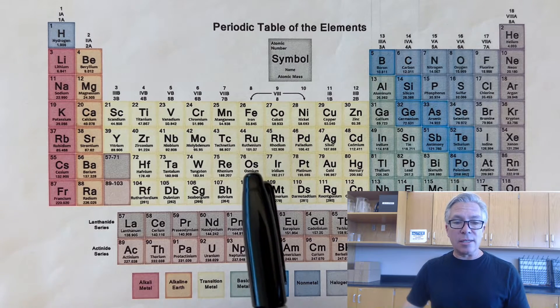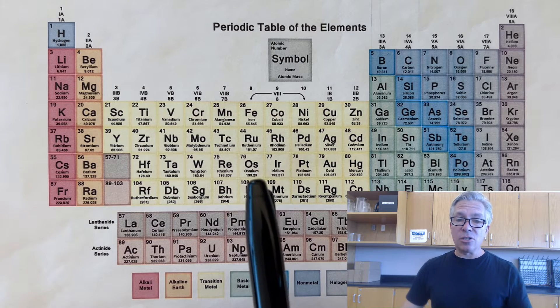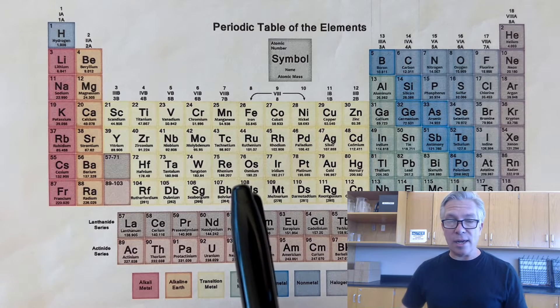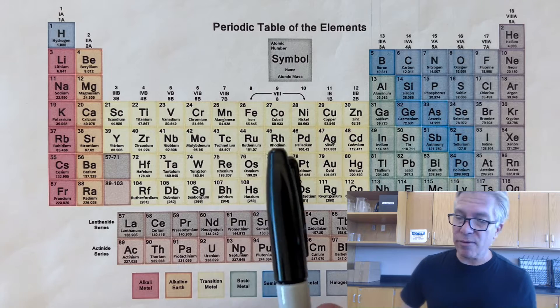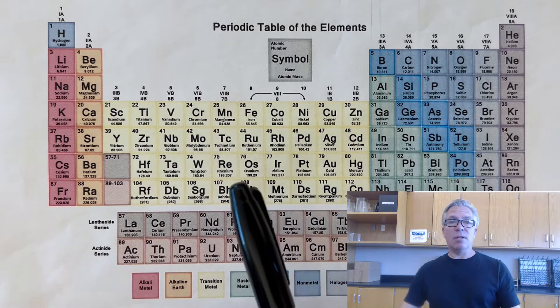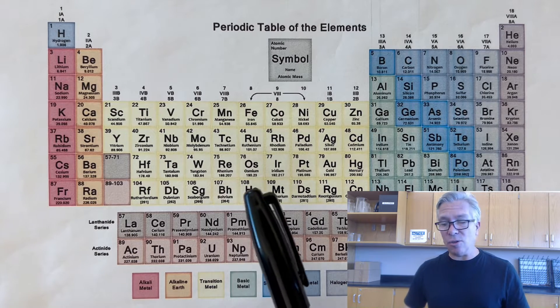One of the early scientists, John Dalton, said they were the same, and that's as good as he could do for the tools he had and the time he had. But later on, we found out that there are different versions of elements, and we call them isotopes.